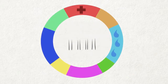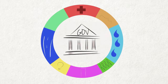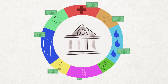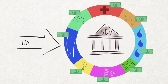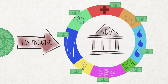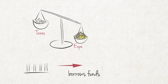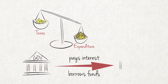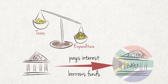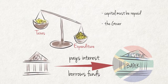The finances of a government are much like that of a household, although the amounts spent by government far exceed that of a household as its responsibilities are much larger. The government has expenditure and requires income to cover such expenditure. The difference between these two items represents a positive or a negative fiscal balance. If expenditure exceeds income, the government must borrow the shortfall. The government pays interest on these borrowed funds, while the borrowed capital must also be repaid when the time period ends. The government can therefore not borrow unlimited amounts of money.